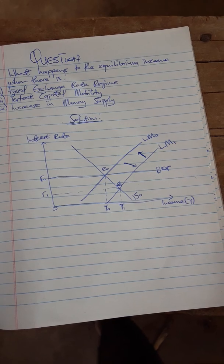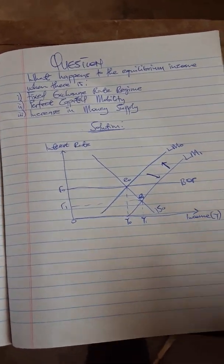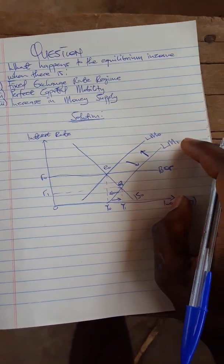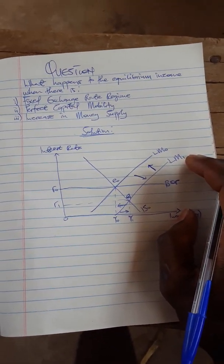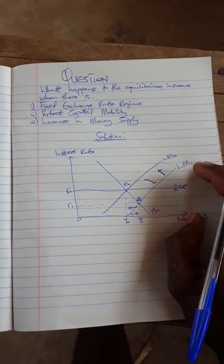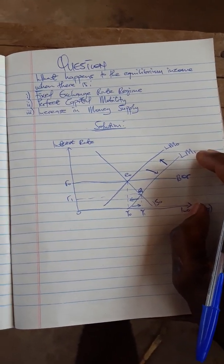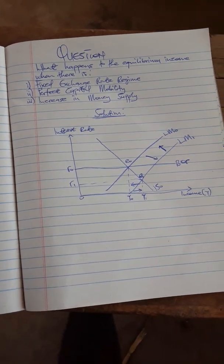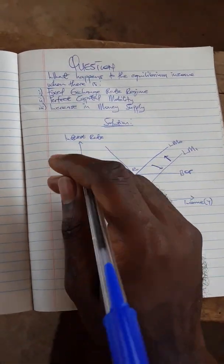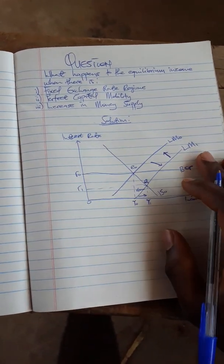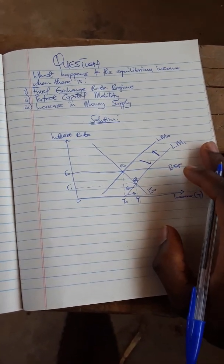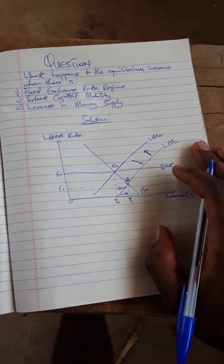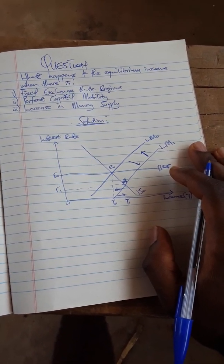This causes the LM curve to shift back to LM-naught. So we can see that at the end of the day, when there is a fixed exchange rate and perfect capital mobility and an increase in money supply, the equilibrium income does not change. This means that this monetary policy has no effect on equilibrium national income.